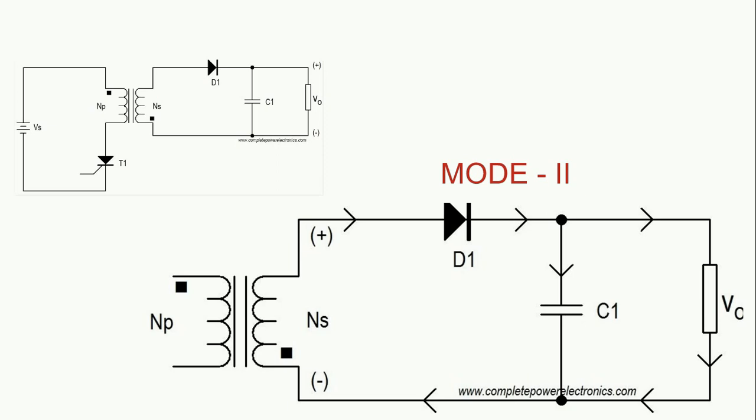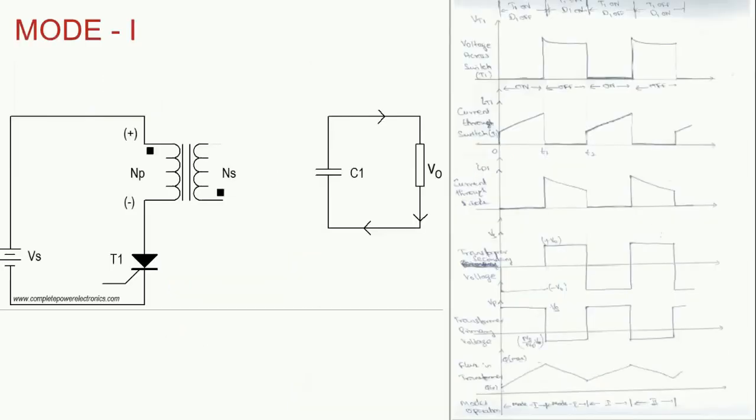Now let us understand the operation further with the help of waveforms. We will understand the waveforms during mode one. See, this is the mode one part of circuit as well as the waveforms. You check it out, the mode one section will be the very first part, this column one you check it out.